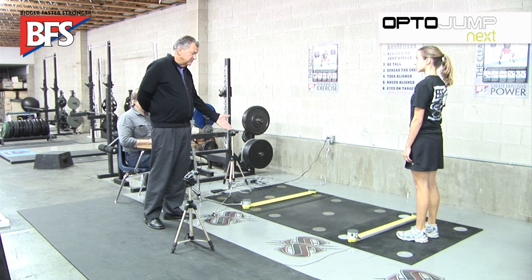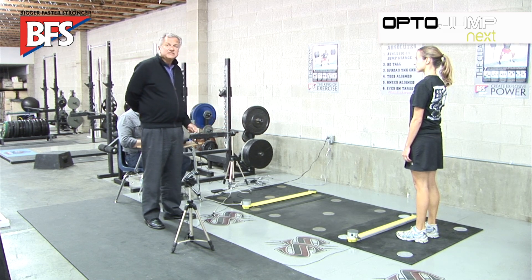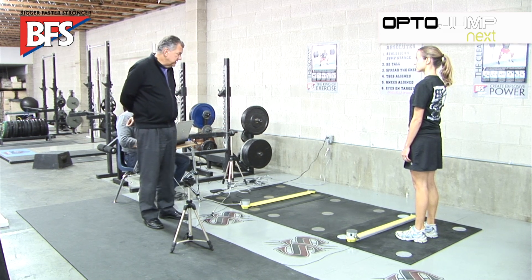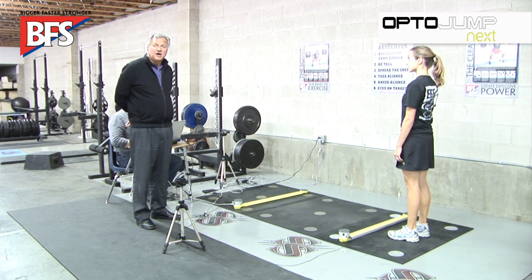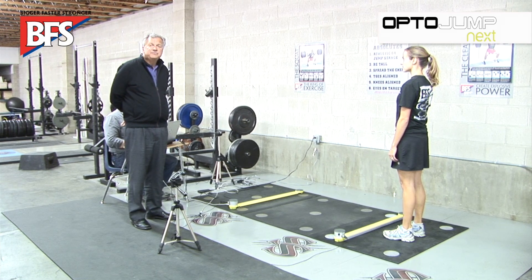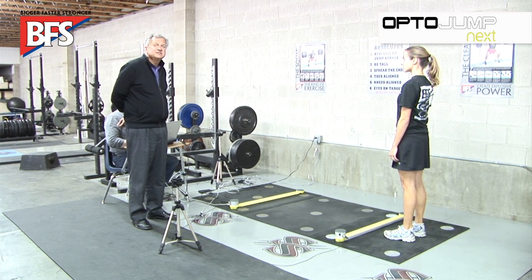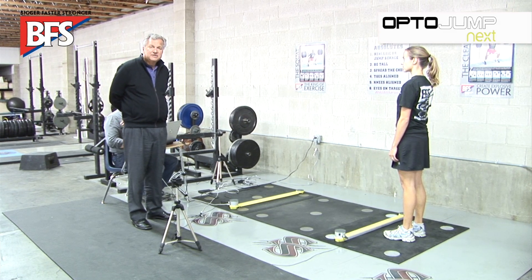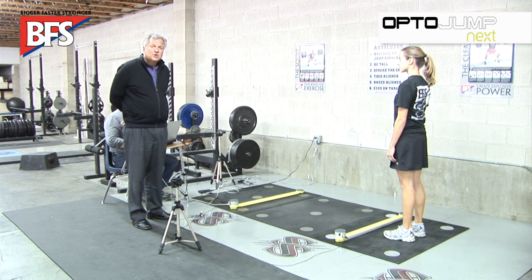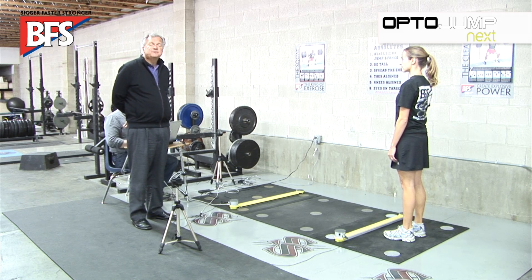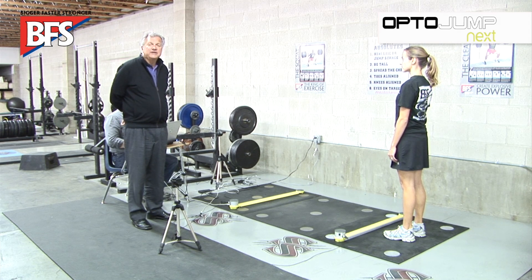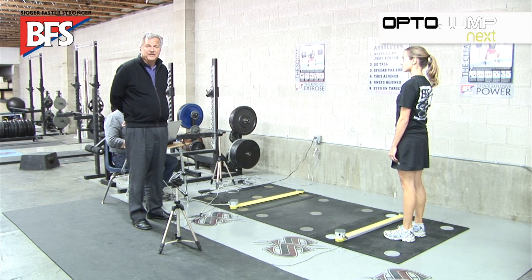I now present the OptoJump system. It's an optical system. Here we have one meter on the floor with 97 beams of light connecting the left side to the right side. As the student enters the system and performs the test, we will be measuring precisely to within a millisecond how well their left foot reacts to the ground — contact on the ground, then flight — compared to their right foot.